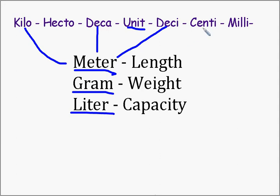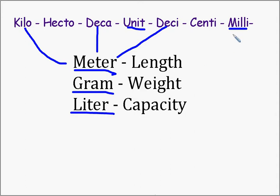Centa means a hundredth, so a centimeter is a hundredth of a meter. And milla means thousandth, so a millimeter is a thousandth of a meter. The same goes for gram and liter — a kilogram is a thousand grams, a milligram is a thousandth of a gram, and a milliliter is a thousandth of a liter.